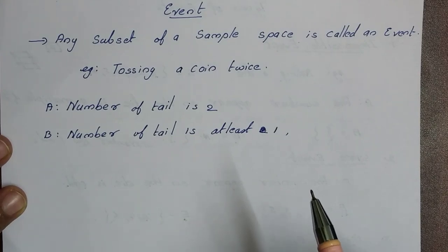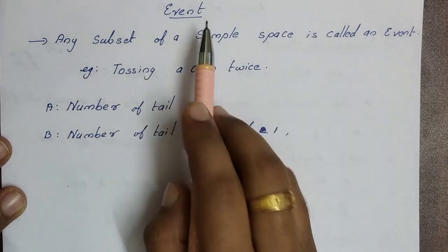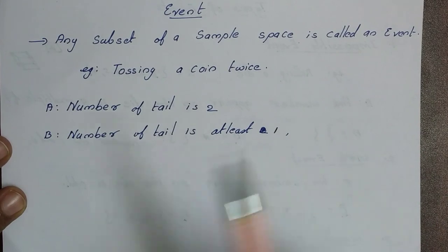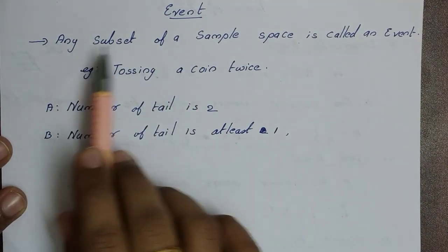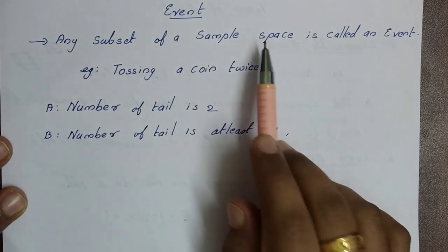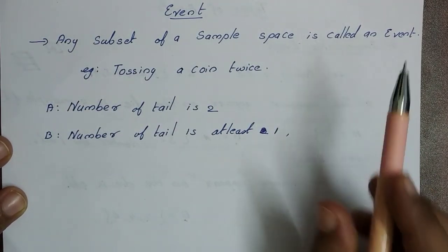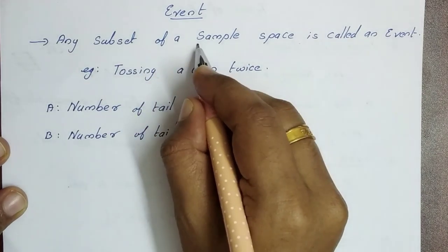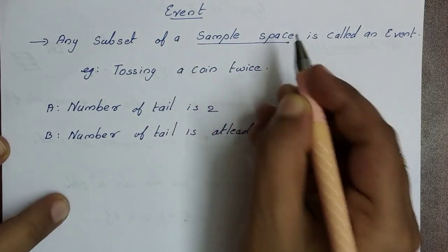Hi friends. So we are going to learn the property question. Let's talk about the topic of the event. The event means that any subset of a sample space is called an event. We already know the sample space.